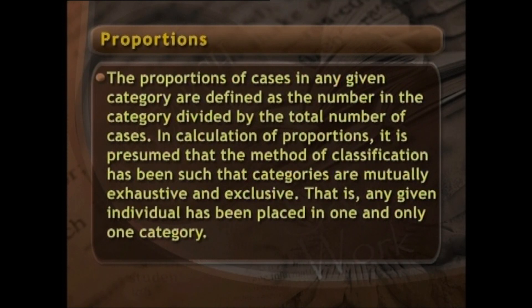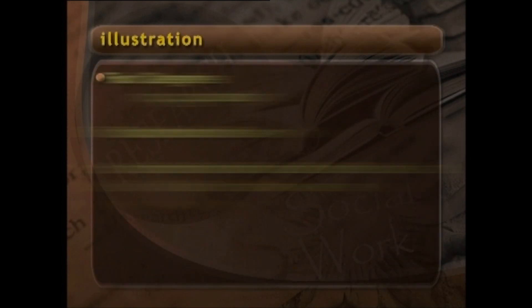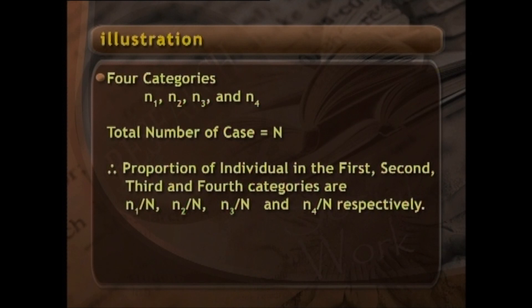In calculation of proportion it is presumed that the method of classification has been such that categories are mutually exhaustive and exclusive — that is, any given individual has been placed in one and only one category. To illustrate, let us take a nominal scale consisting of four categories with n1, n2, n3, and n4 cases respectively.